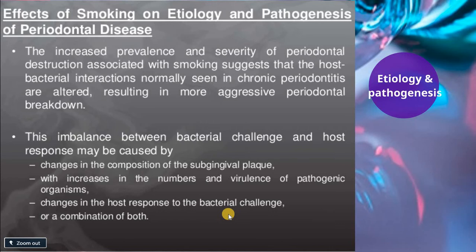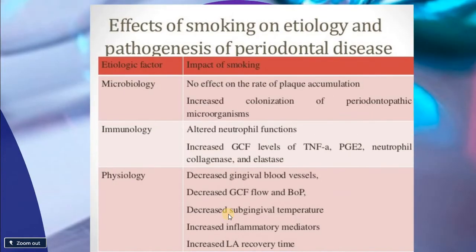This imbalance between bacterial challenge and host response may be caused by changes in the composition of subgingival plaque — shifting from more gram-positive to gram-negative organisms and increasing the mass of pathogenic organisms. At the microbiological level, there is no effect on the rate of plaque accumulation — plaque accumulation is a steady procedure with no relation to smoking status — however, there is increased colonization of putative pathogenic microorganisms.